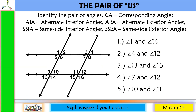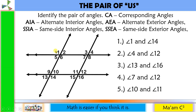Let's have an activity: The Pair of Us. Identify the pair of angles using these abbreviations — CA for corresponding angles, AIA for alternate interior angles, AEA for alternate exterior angles, SSIA for same-side interior angles, and SSEA for same-side exterior angles. Number 1: angle 1 and angle 14. They are on opposite sides of the transversal, meaning alternate, and they are on the exterior part. So these are alternate exterior angles.